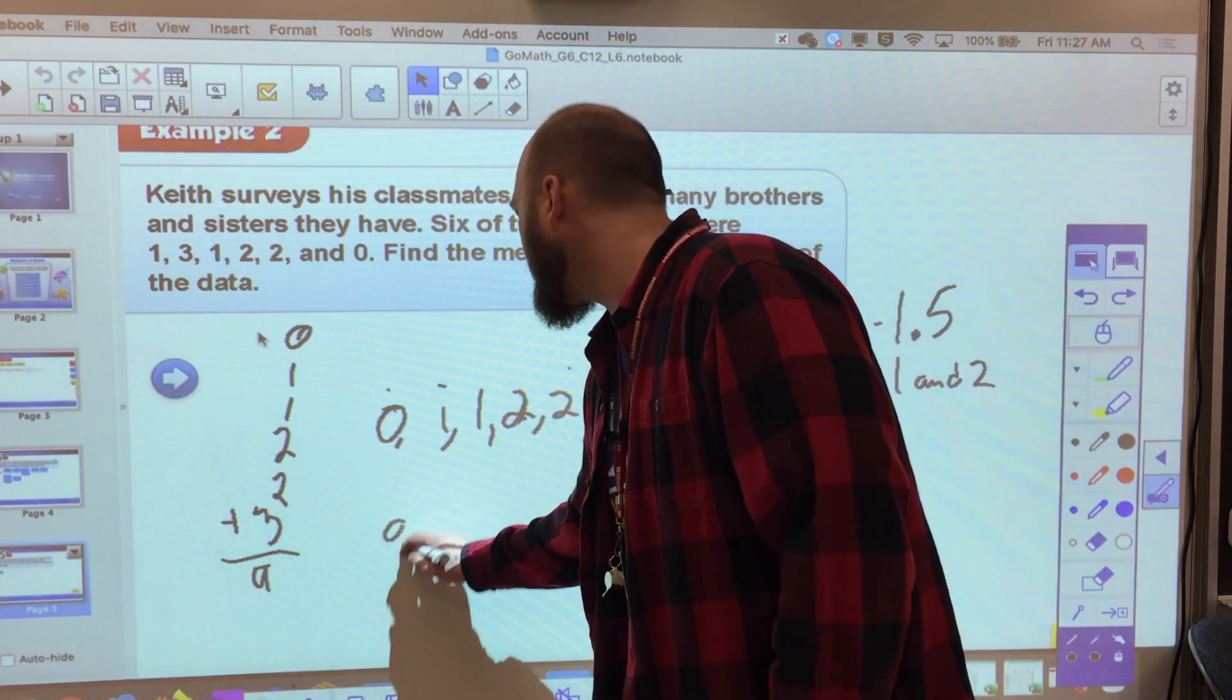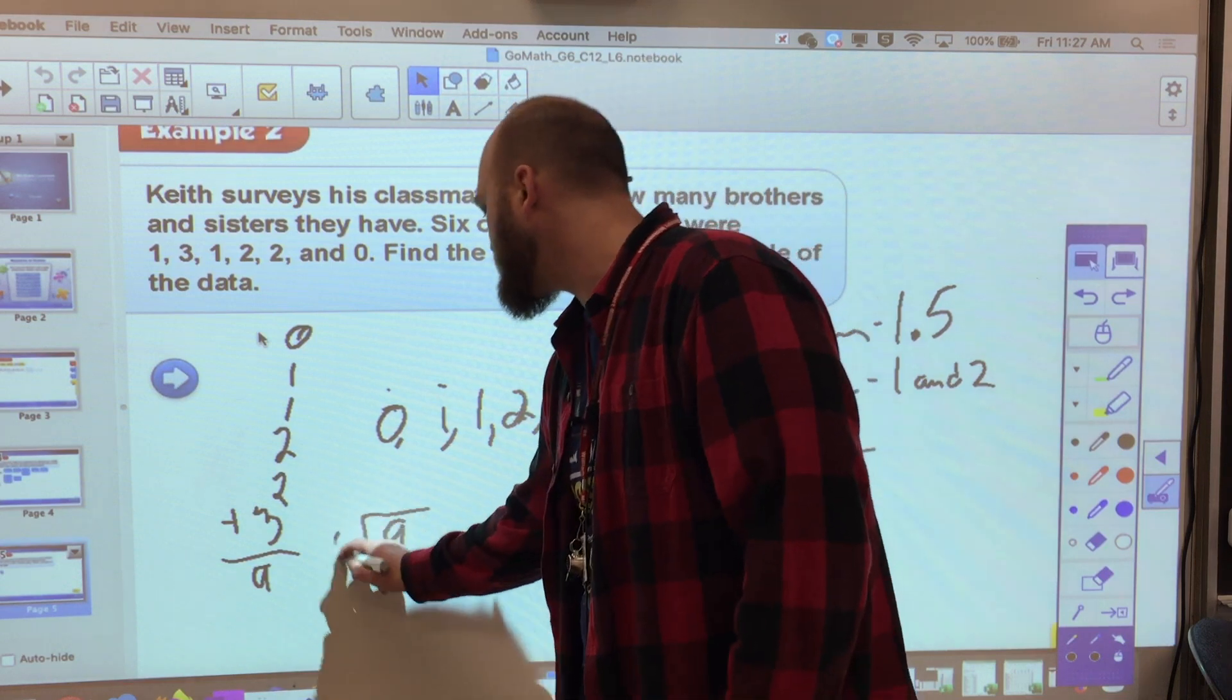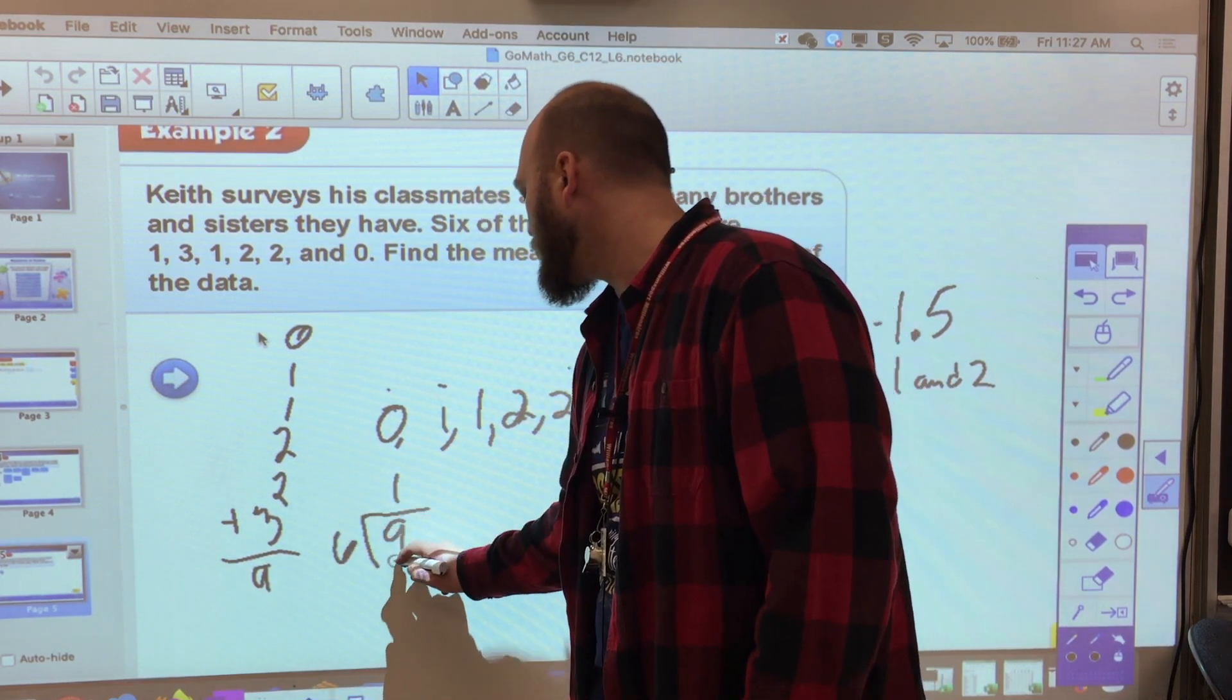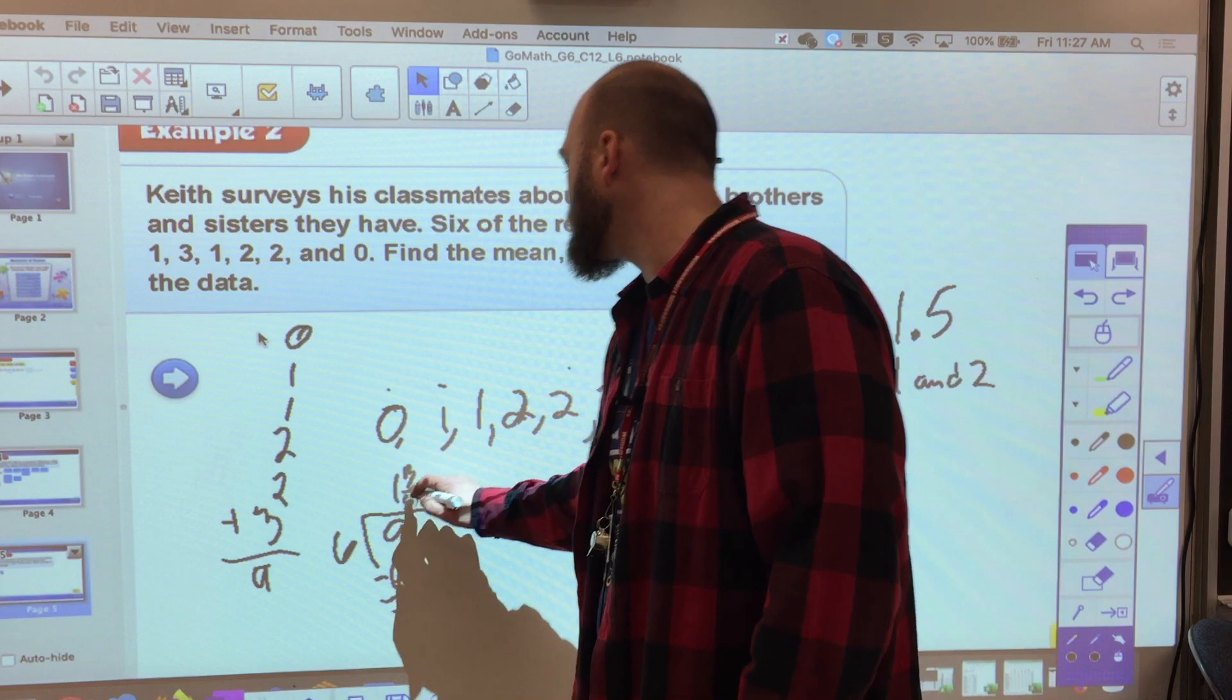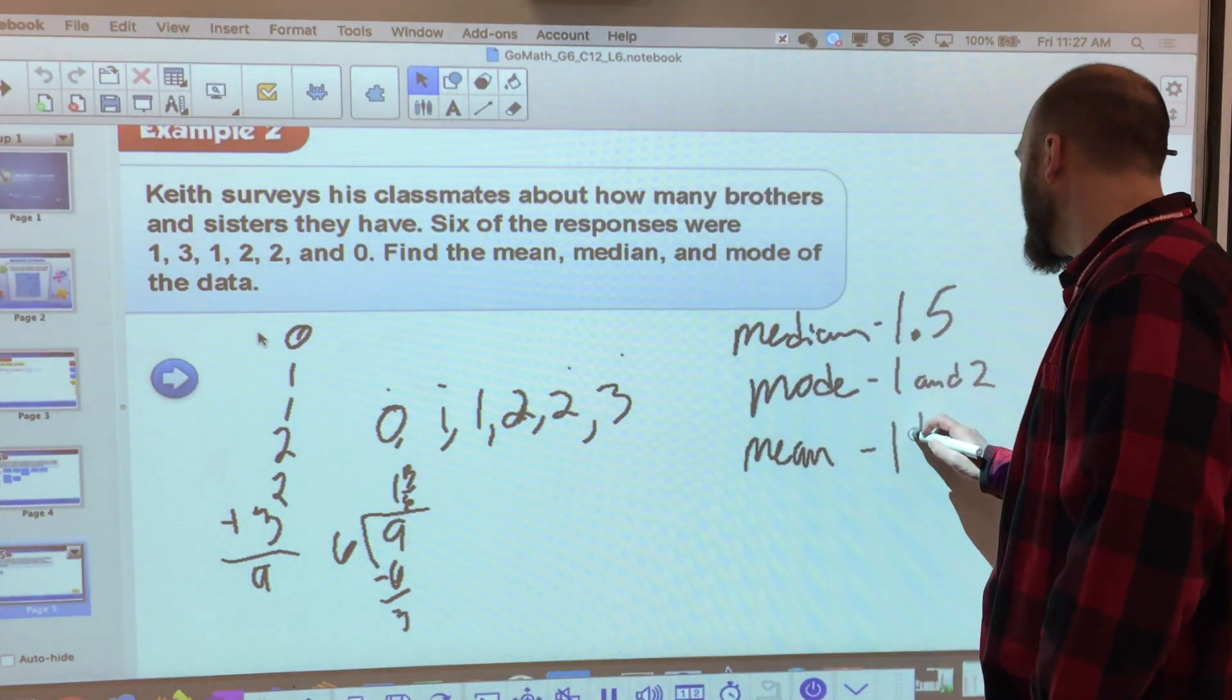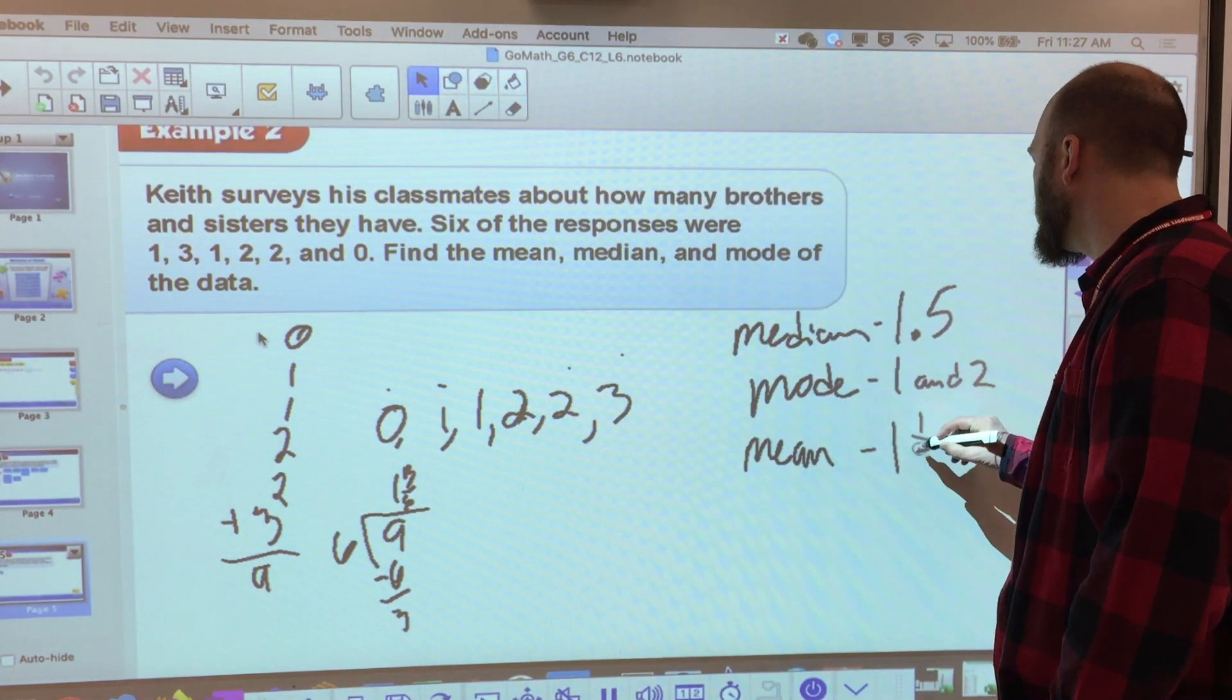So I get 9. And I divided it by 1, 2, 3, 4, 5, 6 numbers. And I get 1 and 3/6, which we know translates to 1 and a half or 1.5.